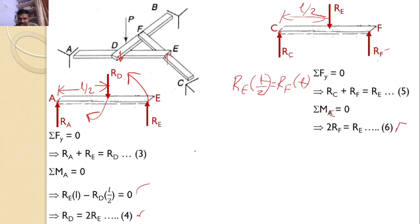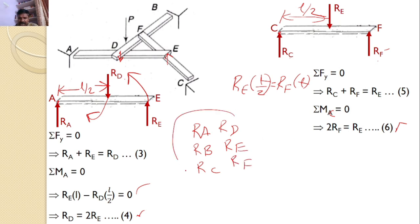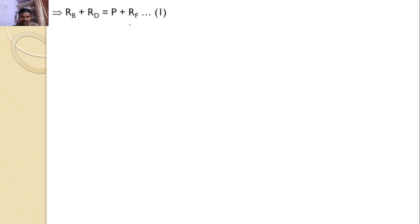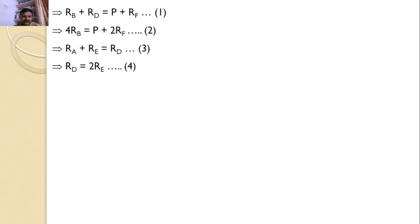In total I have 6 equations and 6 unknowns: RA, RB, RC, RD, RE, and RF. So I can solve all 6 equations to find all 6 unknowns. The 6 equations are: (1) RB + RD = P + RF; (2) 4RB = P + 2RF; (3) RA + RE = RD; (4) RD = 2RE; (5) RC + RF = RE; (6) RE = 2RF.